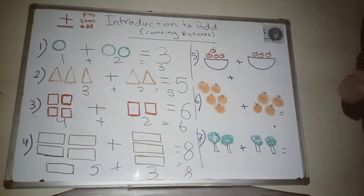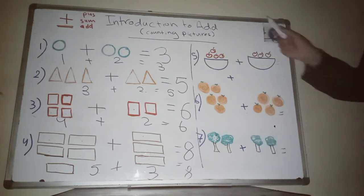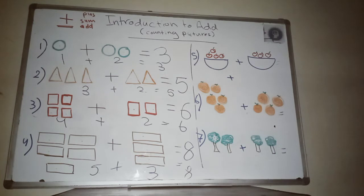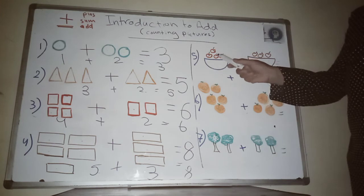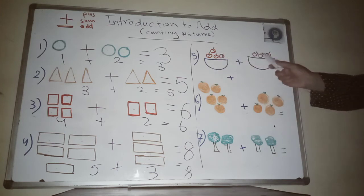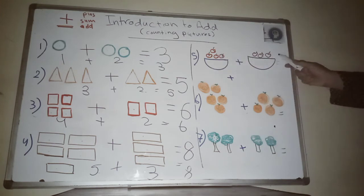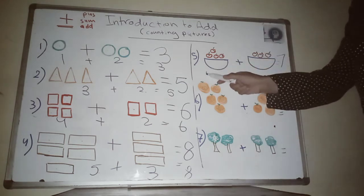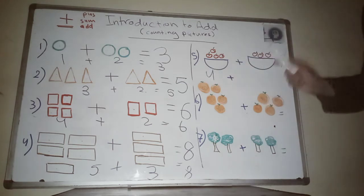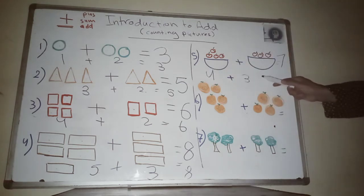Another example: I have four apples and three more apples. How many apples do we have? Let's count — one, two, three, four, five, six, seven. I have seven apples. So four plus three equals seven. Very good!